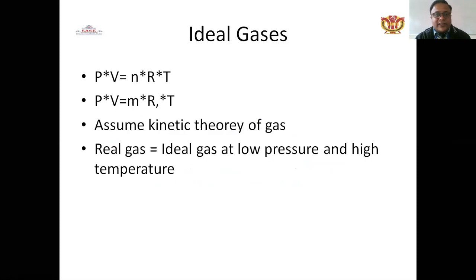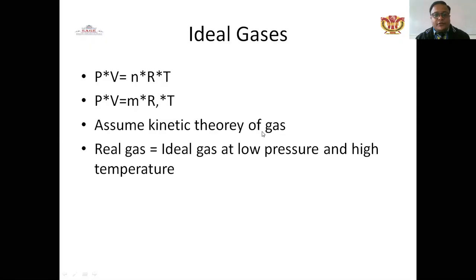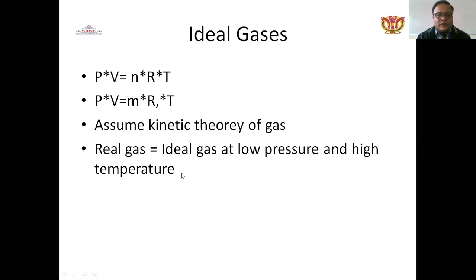For an ideal gas, PV = nRT using number of moles, or PV = mRT using mass. The kinetic theory of gases is followed. A real gas behaves like an ideal gas at low pressure and high temperature — under those conditions, a real gas approximates an ideal gas.